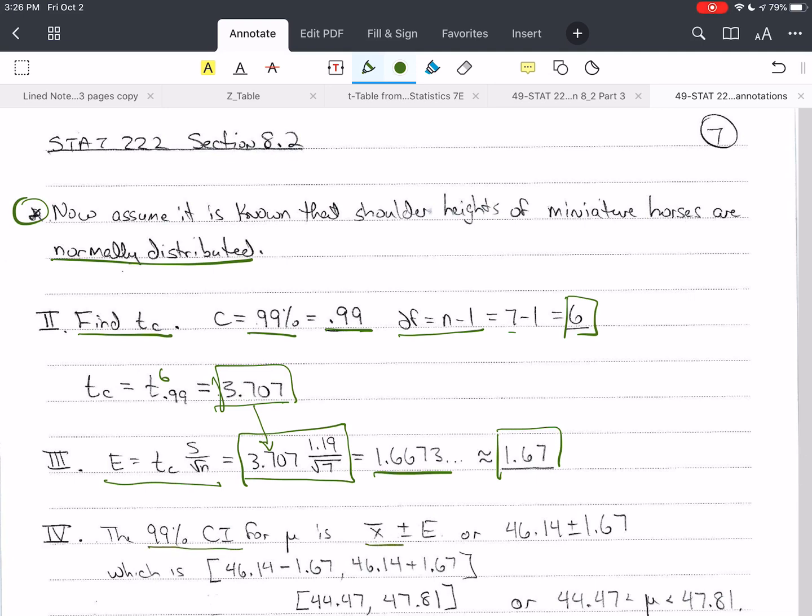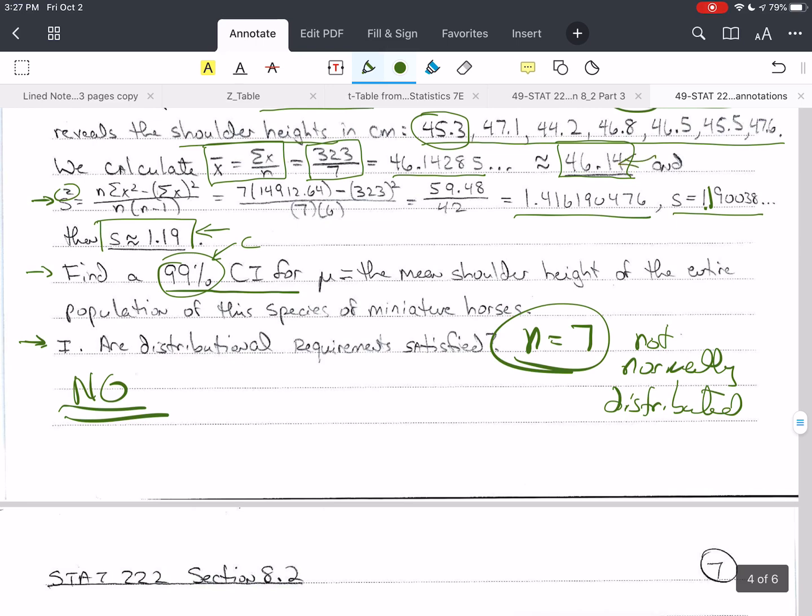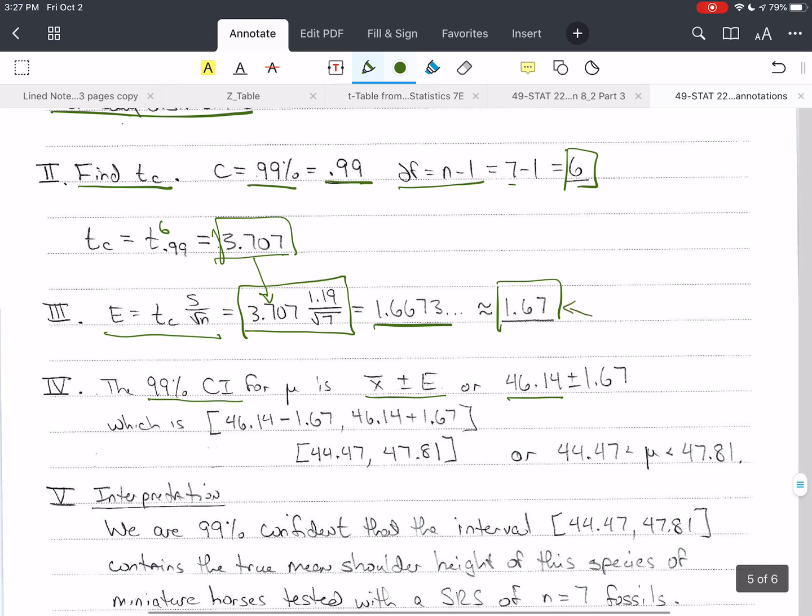Now I need to calculate the confidence interval. The 99% confidence interval is given by x bar plus or minus e. X bar I calculated as 46.14. I calculated e as 1.67. In interval notation, I take x bar minus e, which is 46.14 minus 1.67, and 46.14 plus 1.67. That gives me the final answer of 44.47 to 47.81. This is an interval, a range of values. I am 99% confident that this interval contains the true mean shoulder height of these miniature horses. Another way to write this is mu is between 44.47 and 47.81.